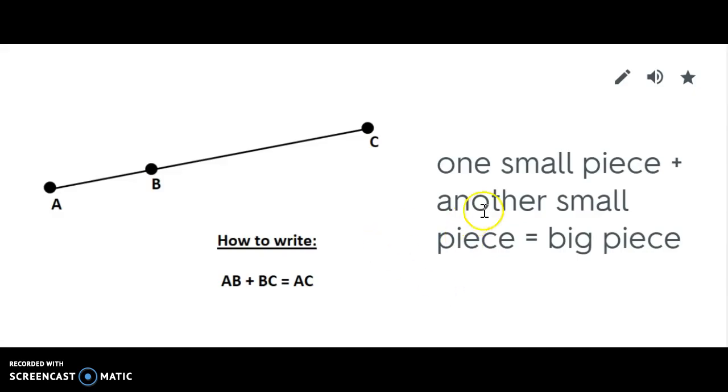So for the segment addition, the best way to remember is it's one small piece plus another small piece equals the whole thing. And so here's the first small piece on the left. Here's the second small piece on the right. And when I put those together, I get this whole thing from A to C. And so that's why it's AB plus BC equals AC. And so when you have two small pieces, you add them together and you get the whole thing.